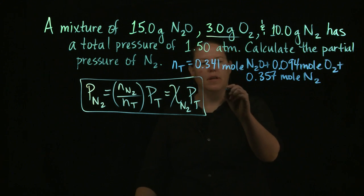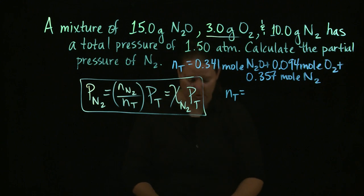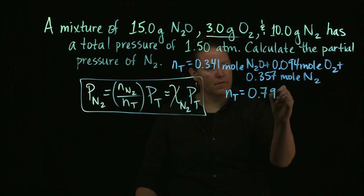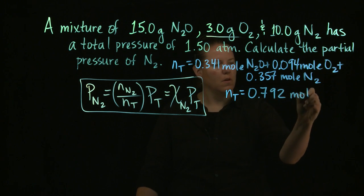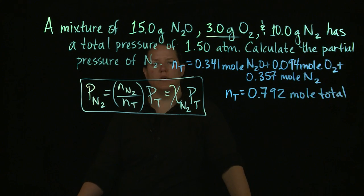Alright, so also apparently had some issues, but you know, we'll talk about that later. Okay, so in terms of N total, don't we all have issues though? Alright, so 0.341 plus 0.094 plus 0.357. Wow, I got a really cool number like 0.792 moles total. Wow, that's awesome.